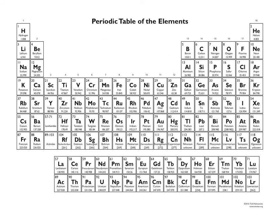The general trend is that as we go up and to the right in the periodic table, atoms tend to get smaller. The size of atoms matters because it's related to many other properties we're going to talk about — the smaller the atom, the more tightly held the electrons are, the harder it is to remove them, and the more it might want more electrons. The trend going up and down is pretty intuitive, but the reason atoms get smaller as we move to the right is due to electron shielding and effective nuclear charge.